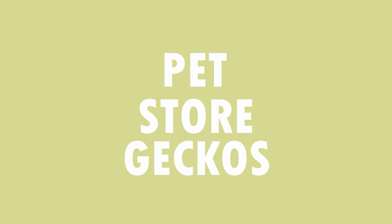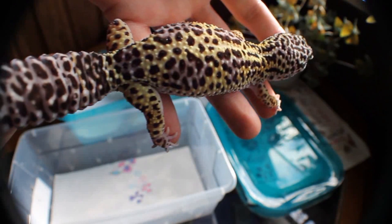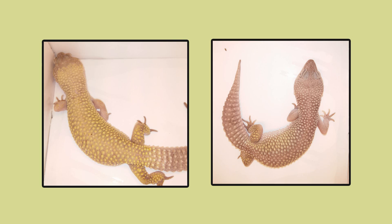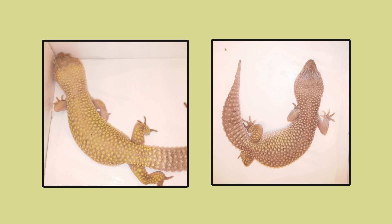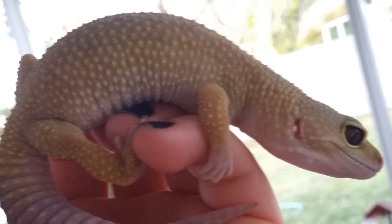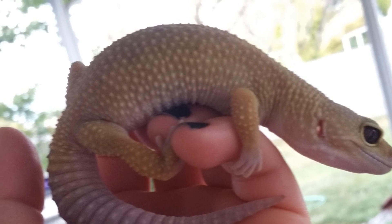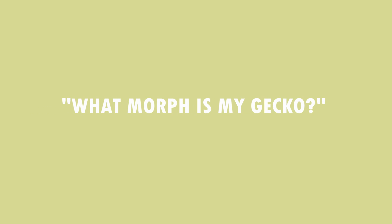I'd like to briefly move on to pet store geckos and why I wouldn't encourage using them in a breeding project. The main reason is you really don't have enough information about the gecko's genetic background to be truly confident in what you're breeding with. For example, looking at two geckos in a shop — you might say Murphy's Patternless, and you'd be correct for the one on the right, however the one on the left is actually Murphy's Blizzard. You can't tell from looking at a gecko if it's homozygous — even the best breeders in the business can't look at a gecko and be sure of its genetic history.